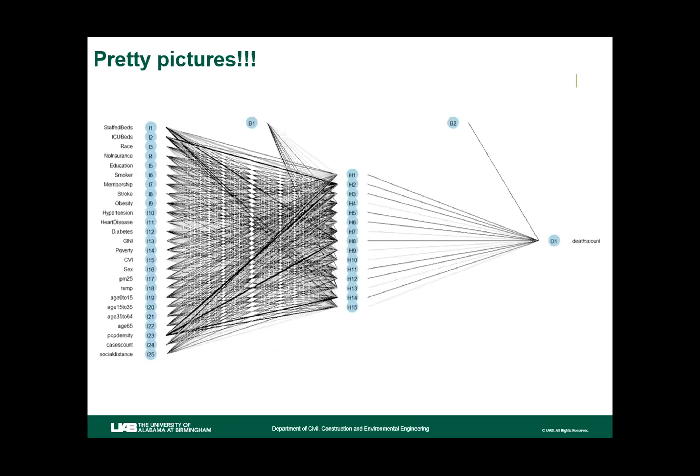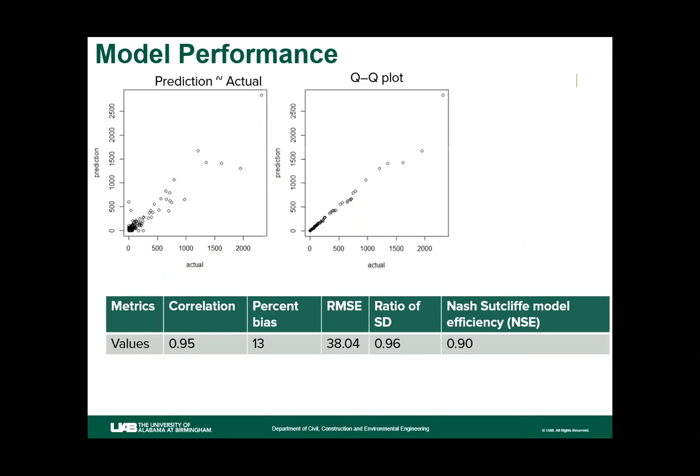The neural network diagram shows the factors on the left, the outcome — death count — on the right, and the hidden layers in the middle. B1 and B2 represent the constant weights applied to each of the hidden layers.